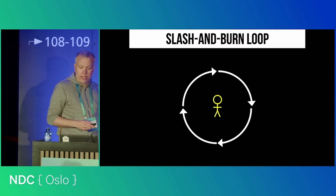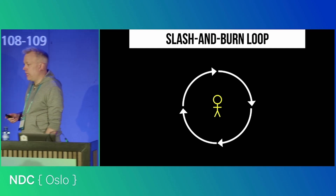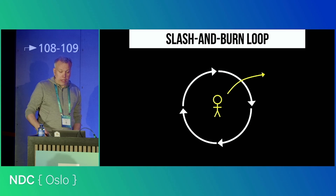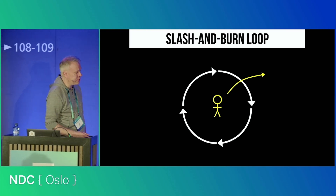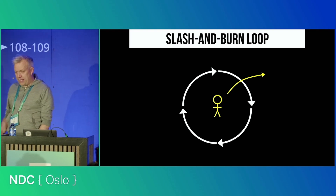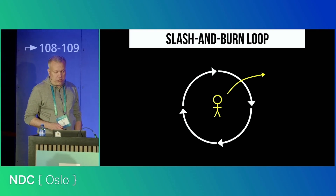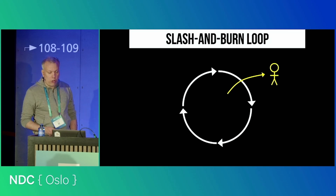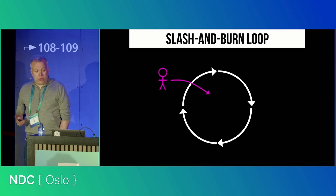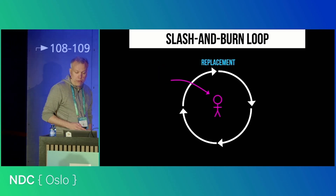So, the pattern looks like this. This is the slash and burn loop. The person in the middle, the yellow stick figure, is the tech lead on the team. The tech lead decides to leave — maybe it's not as much fun as it used to be, or maybe they got a new job offer, or maybe they just decided to do something else. So out they go. And when the tech lead leaves, you need to replace them. So the new tech lead is brought in. This is the first step of the loop — this is called replacement.